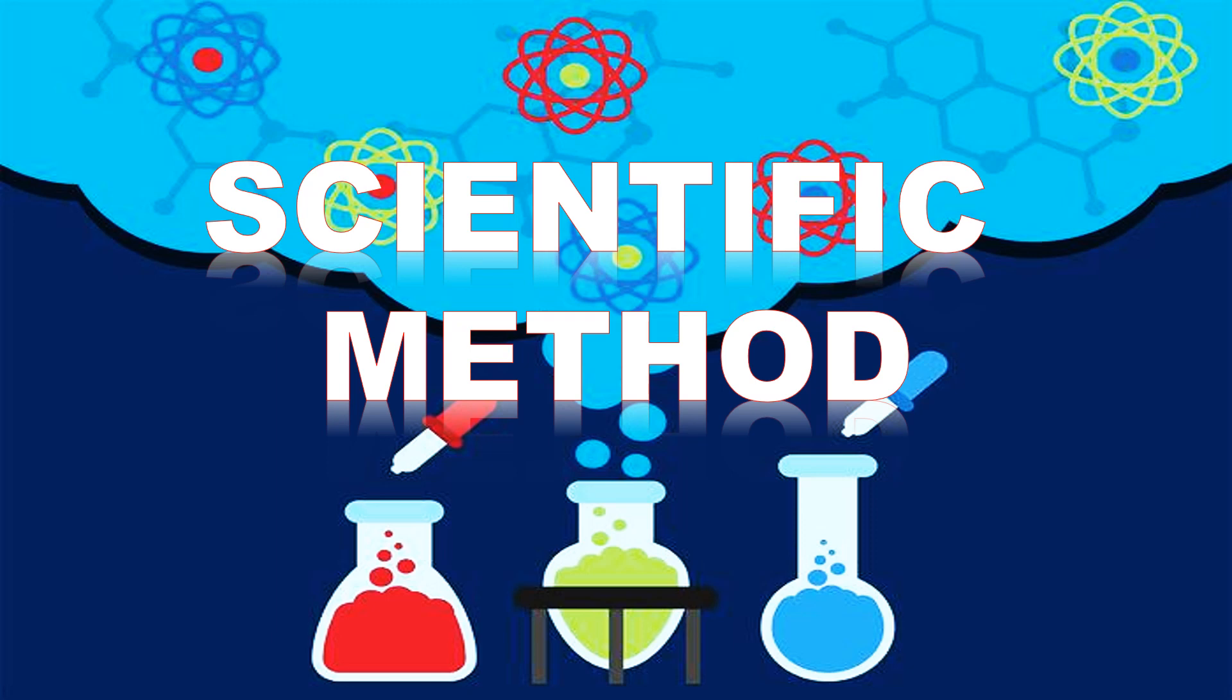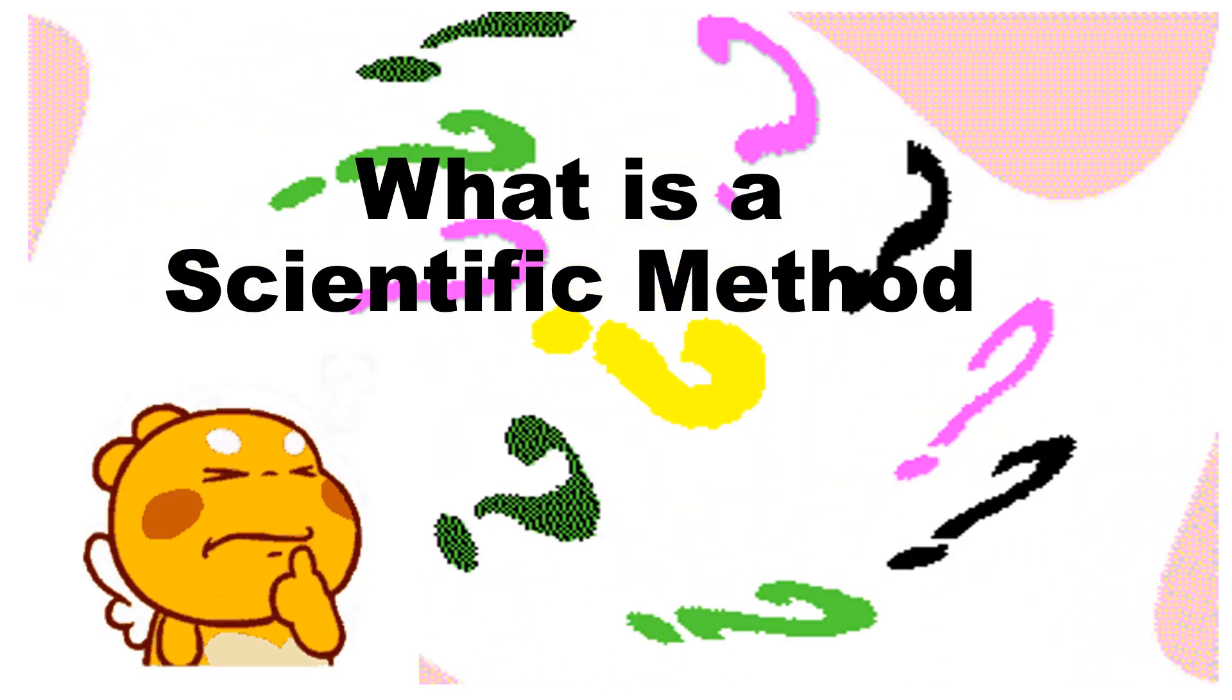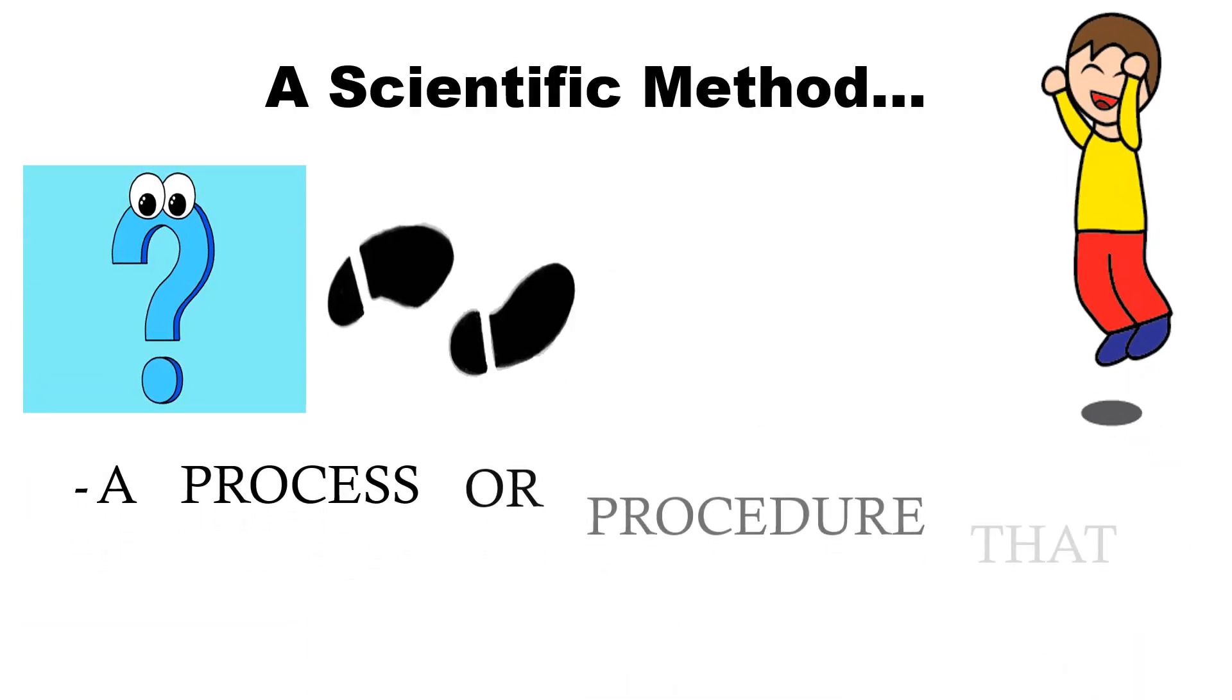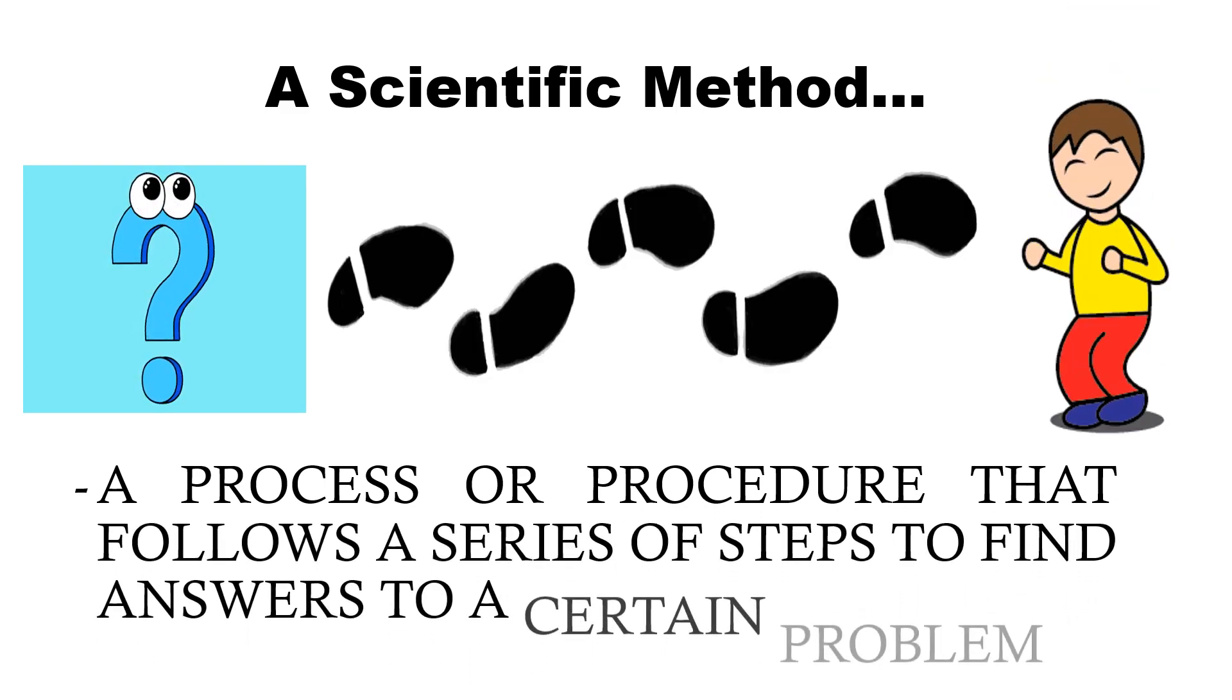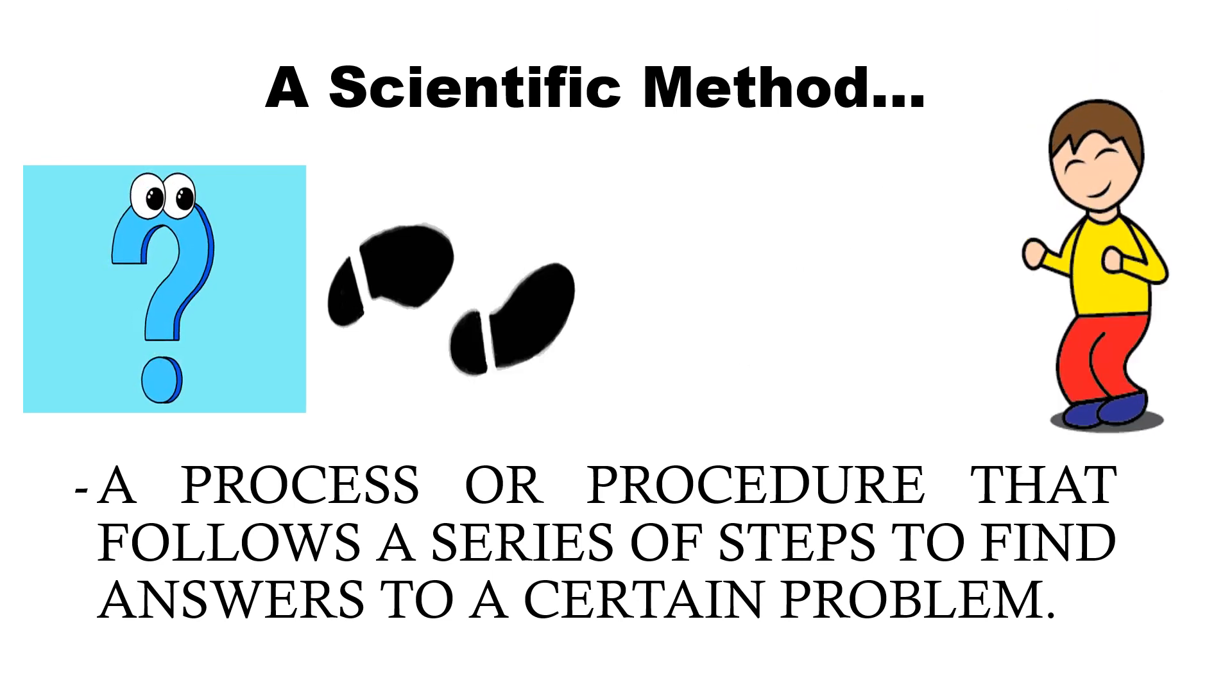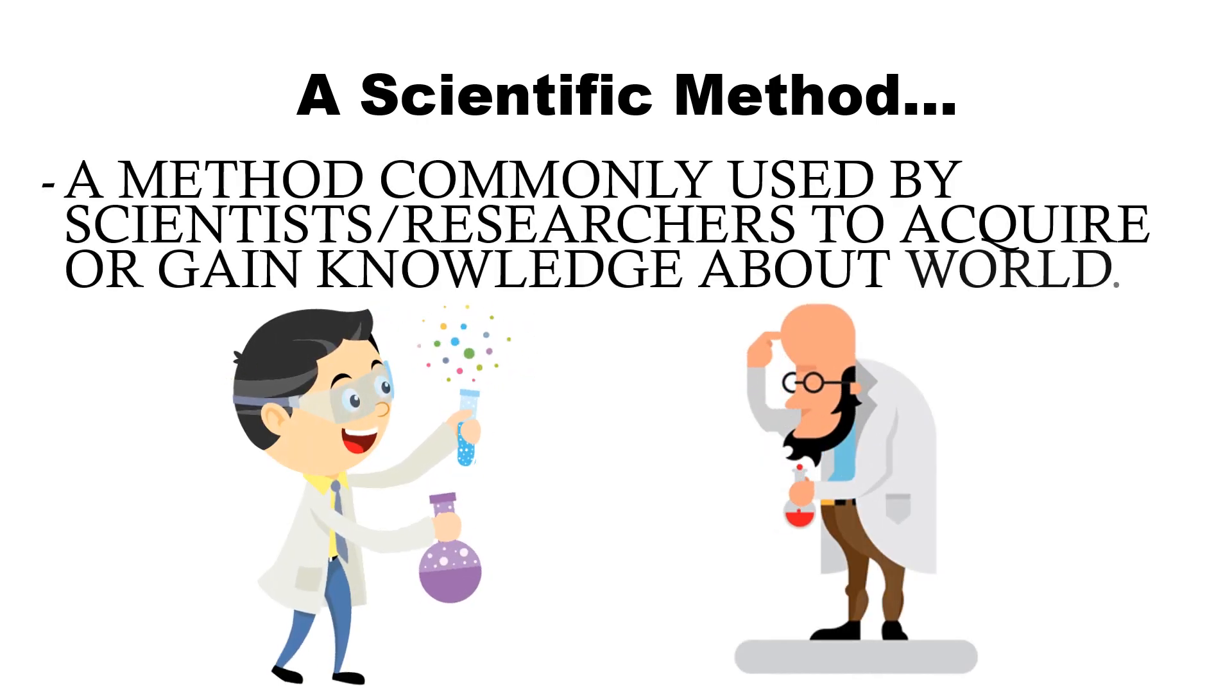We will find out. First, let us answer the question, what is a scientific method? A scientific method is a process or procedure that follows a series of steps to find answers to a certain problem. Another simple definition would be a method commonly used by scientists or researchers to acquire or gain knowledge about the world.